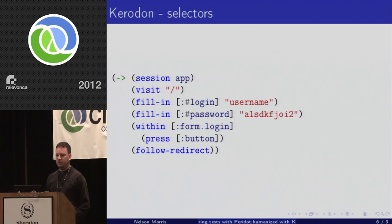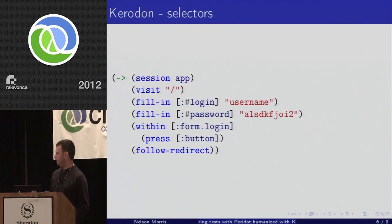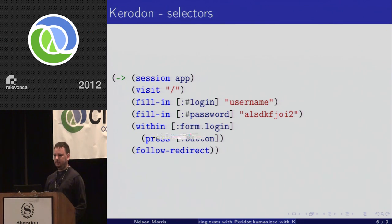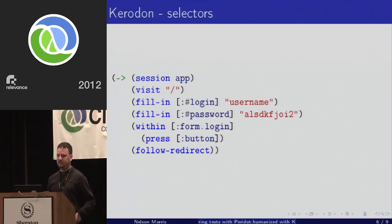Since you don't always have fields with labels, Kerodon looks at the label and finds the associated text field for the username. It also allows you to use the Enlive selector syntax to choose which HTML elements you're interacting with. In addition, there's a within-form scope that allows you to restrict all interactions in the body to a particular section of the HTML.